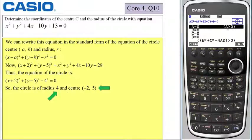All I need to do is compare the coefficients of x squared, y squared, x, y, and the constant term to my equation here, because it is already in the form equal to 0.